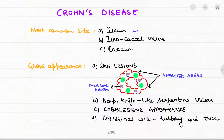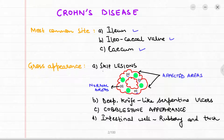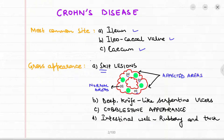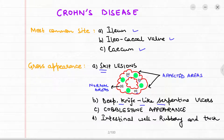Moving on to Crohn's disease in detail: the most common site is the ileum, the ileocecal valve, and the cecum. On gross appearance, we see the presence of skip lesions — lesions that are not continuous but are surrounded by normal mucosa. The ulcers in Crohn's disease are deep, knife-like, and serpentine.